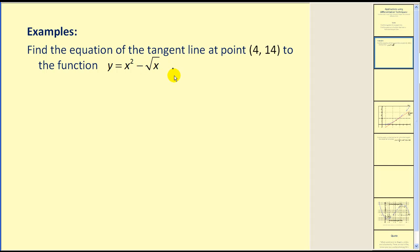We can't use the power rule when it's in radical form. So the first step will be to rewrite this with rational exponents. So we'll have y equals x squared minus x to the power of one-half.